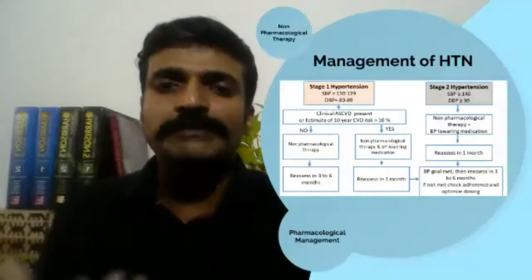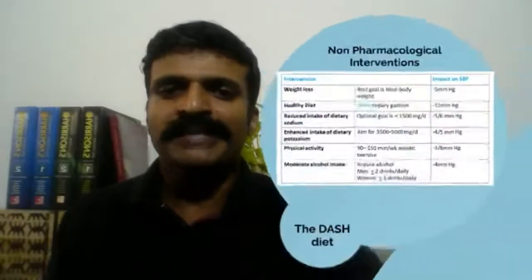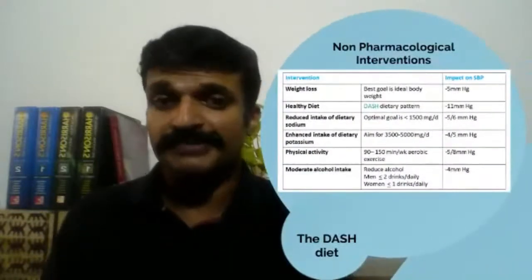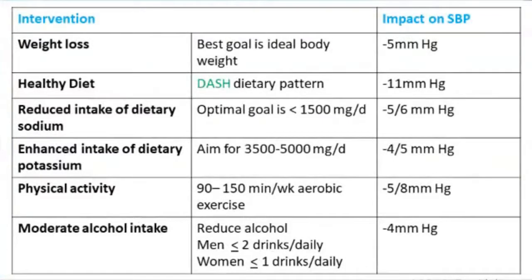Now let's look in more detail at the non-pharmacological and pharmacological therapies, starting with non-pharmacological therapy. Weight loss is one of the best and most important interventions in hypertension management — it helps reduce blood pressure by about 5 mmHg once you attain ideal body weight. For diet, we use the Dietary Approaches to Stopping Hypertension, or DASH diet, one of the best-researched diets for reducing hypertension.